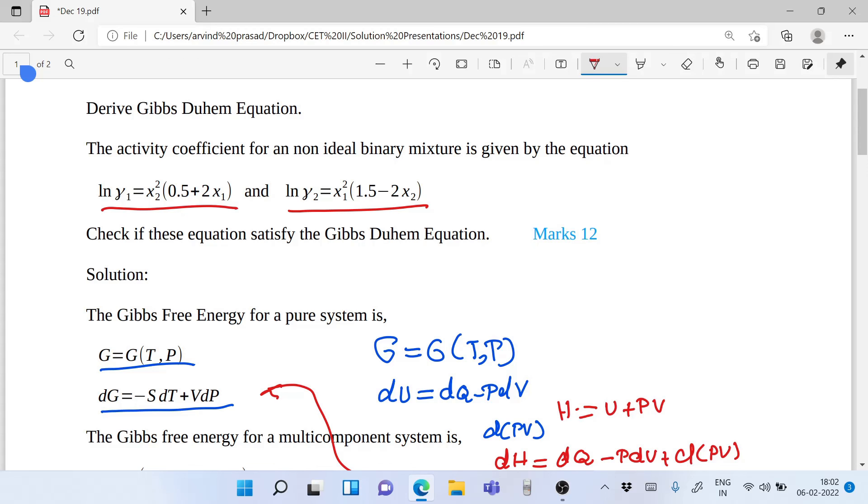If it satisfies Gibbs-Duhem equation, it means thermodynamically it is a consistent equation. You call these consistent equations - mathematically they are consistent. But they may not exactly define the activity coefficient in the entire temperature and pressure range because the equation must have been contrived from very limited VLE data for a very limited range. We will not be able to extrapolate it beyond the temperature and pressure range for which it is written. This is important to understand.